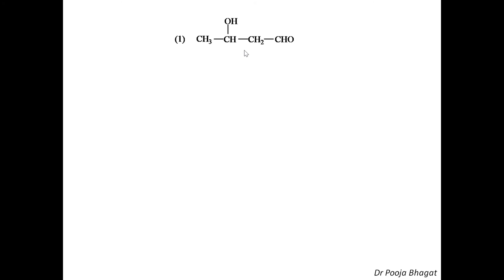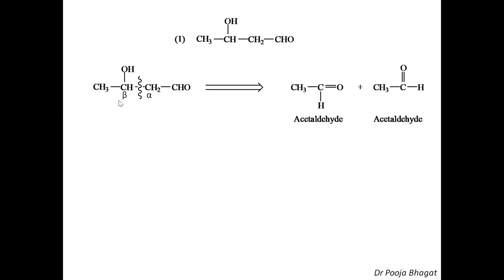The first example: let us take this beta-hydroxy aldehyde. This is the carbonyl group, aldehyde group; this is the alpha carbon, this is the beta carbon — so it is a beta-hydroxy aldehyde. These methods are called retrosynthesis — meaning you have to synthesize this compound, so we move in the opposite direction to determine what starting material we need. We select the alpha and beta carbon, then do the cleavage at the alpha-beta bond. This part becomes the carbonyl part and a hydrogen comes to the other part. So it is CH₃CHO — this aldol is the self-condensation product of acetaldehyde.